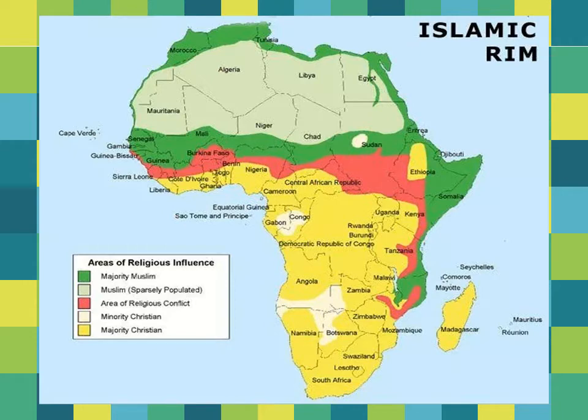Inside that rim, the light shaded region shows that the Muslim population is quite thin — sparsely populated regions of Algeria, Libya, Chad, Mauritania, and so on. Further down from the green Islamic Rim, there is a pink portion representing areas of conflict between the two communities — Muslims and Christians.